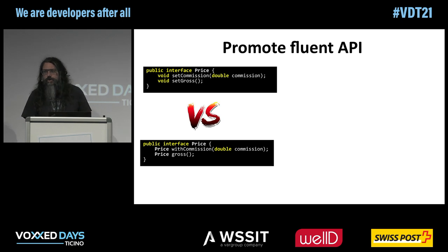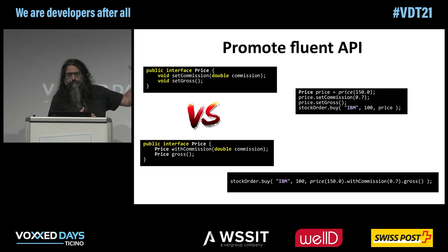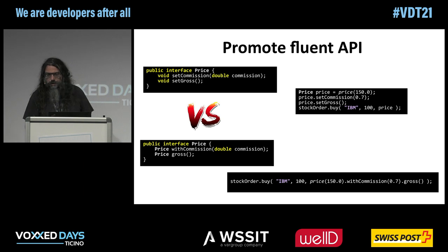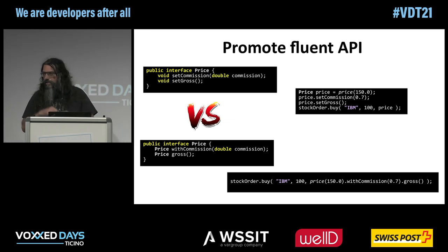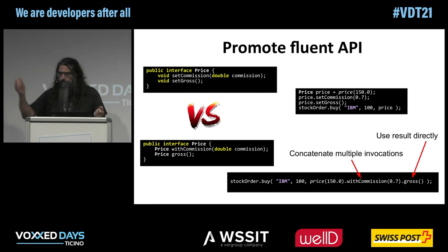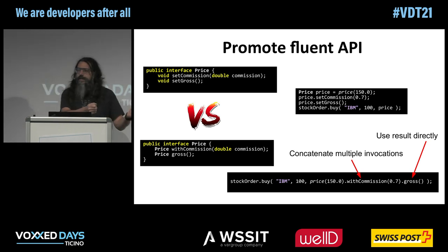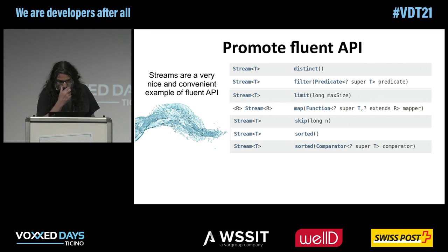Another thing I like is Fluent API. In combination with the Price object, you can see the difference between the two approaches. With the traditional setter approach, you create the price, then call setCommission, setFactor for gross or not, and finally use that price object to call the buy method. With a Fluent API you don't need to do this — you can fluently create and configure the value and use it directly inside the method invocation. In the end, it reads much better.